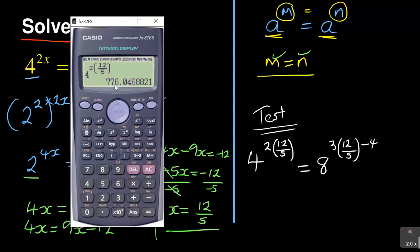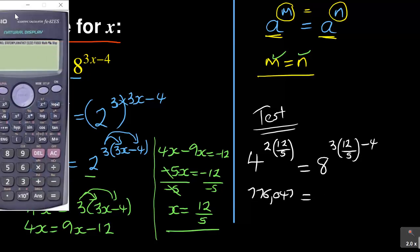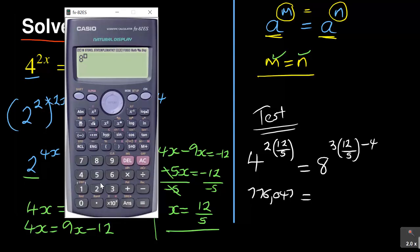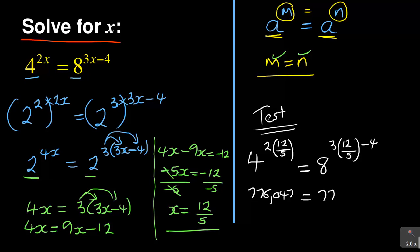So I'll write here, 776.047. That was my left hand side. Now I'm going to test my right hand side. 8 to the exponent 3 into 12 over 5 minus 4. When I do that, I'm getting 776.047. So it's 776.047. Now you can see the left hand side is equal to the right hand side. So what does it mean about my answer? It means my answer is definitely correct. So that's how you can solve for x. And then after that, test your answers.